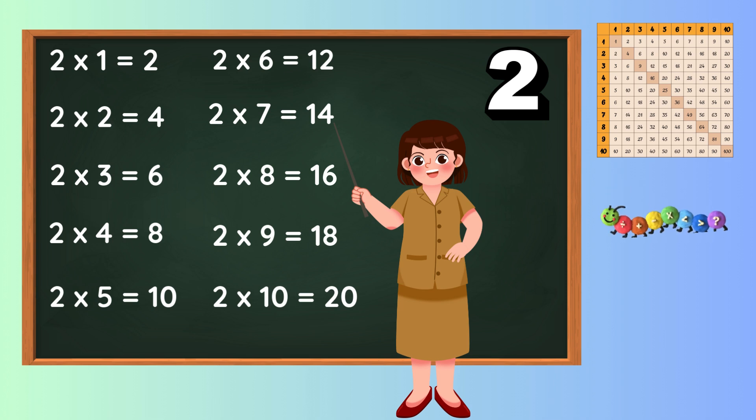6 times 2 is 12, ring the bell. 7 times 2 is 14, know what I mean? 8 times 2 is 16, keep it clean. 9 times 2 is 18, math machine. 10 times 2 is 20, counting's plenty.